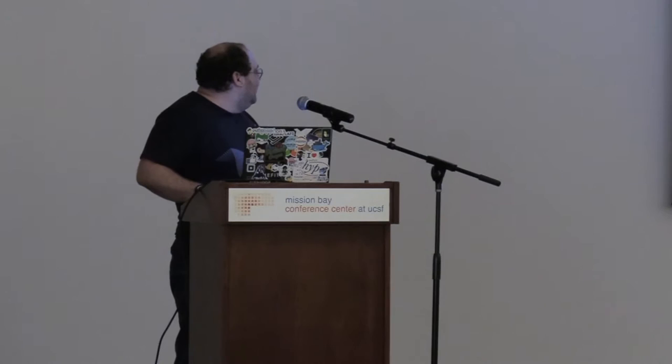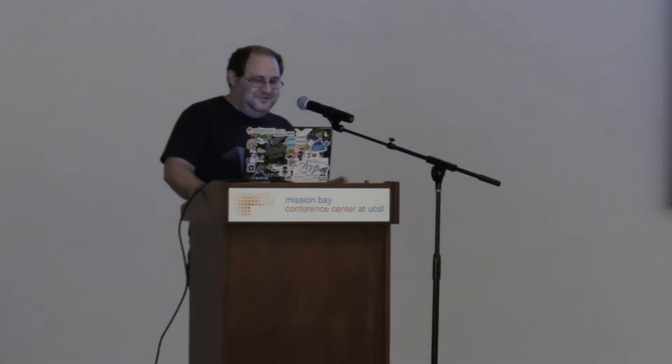So I assert that one equals two, and you can see that I have an assertion error — one is, in fact, not equal to two. It's a big surprise for everyone, but that's basically how testing works. Pants can run your stuff directly. It's usually not that useful, although it's sometimes useful for testing purposes, and I'll talk more about how to write something that it can run.